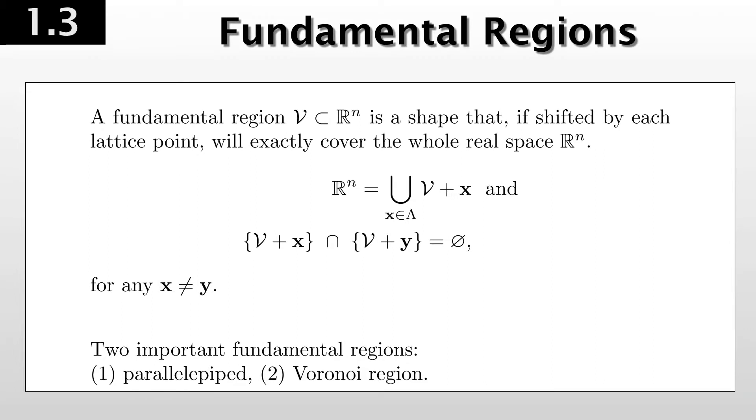So mathematically speaking, we can write that as the whole real space is the union of the fundamental region plus offset by the lattice x, where x is any lattice point. And the no overlap means that the fundamental region shifted by x and the fundamental region shifted by y is always empty for any x not equal to y.